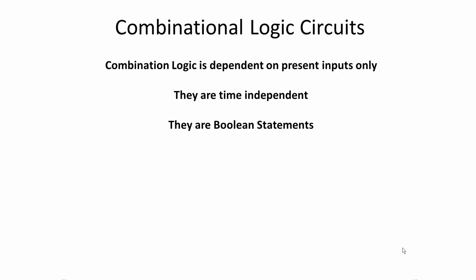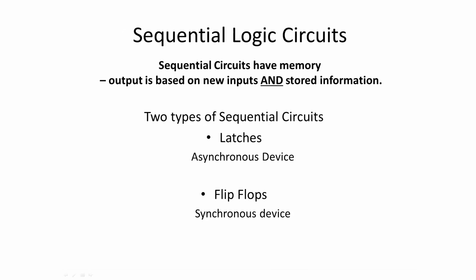All of the circuits in the previous videos were constructed from gates. Gates can only make what are called combinational logic circuits. Combinational logic is a system in which the output is dependent only on the present inputs — there's no feedback from output to input. These circuits are time independent and are all done with Boolean statements.